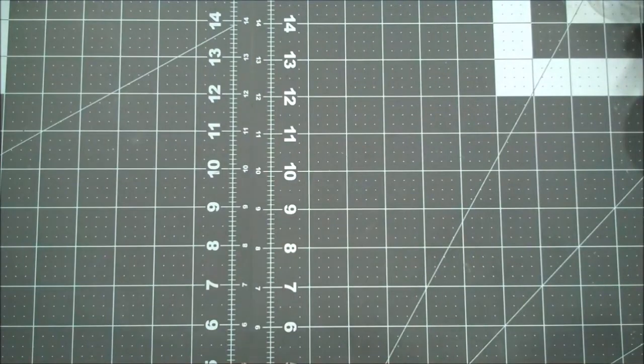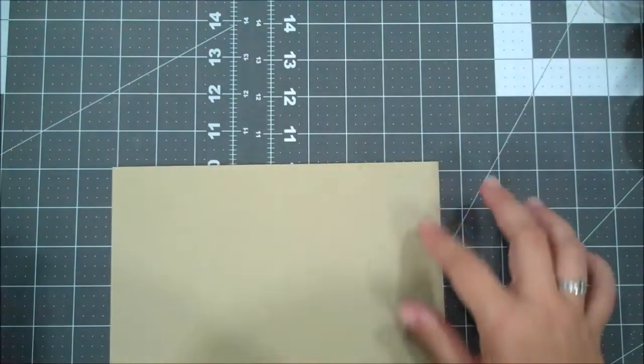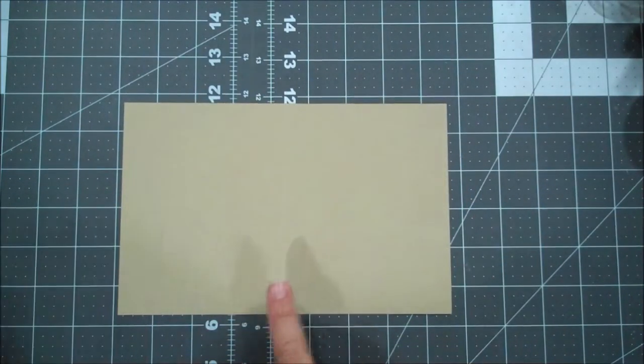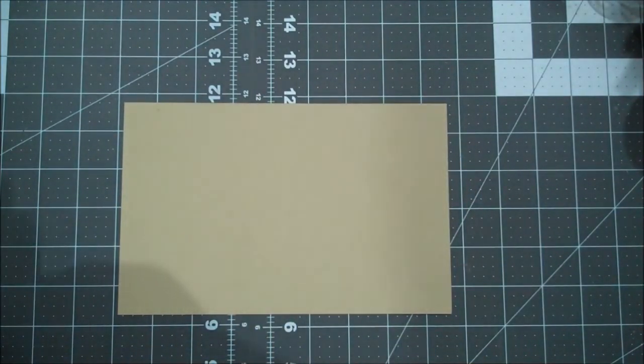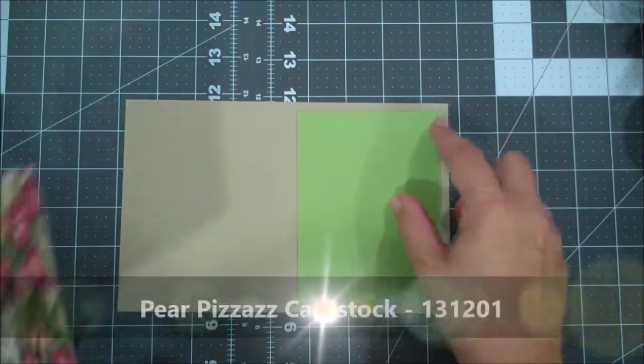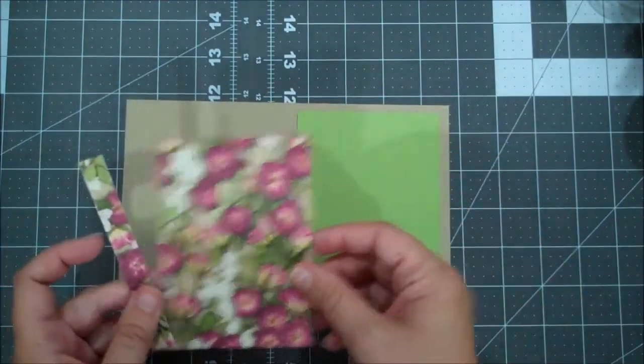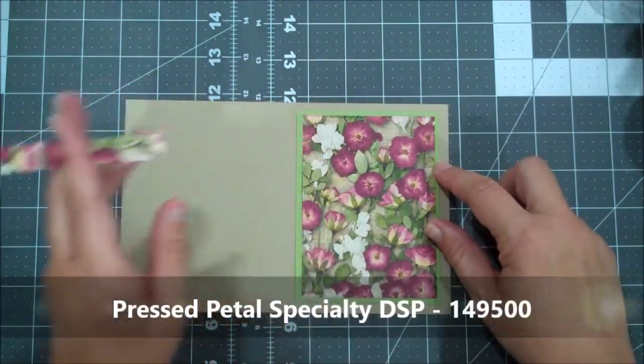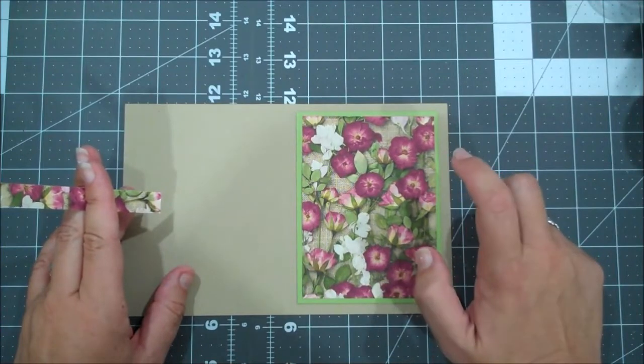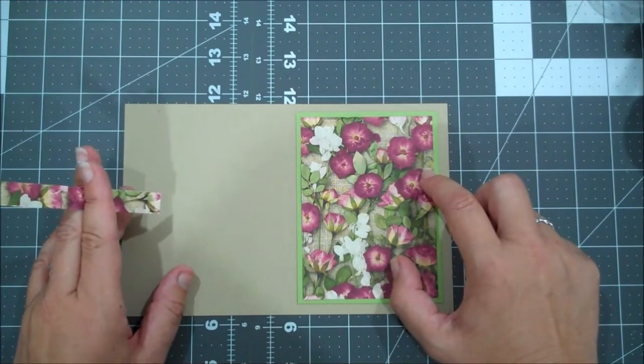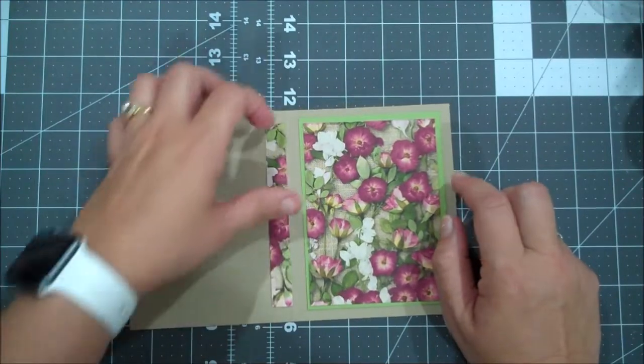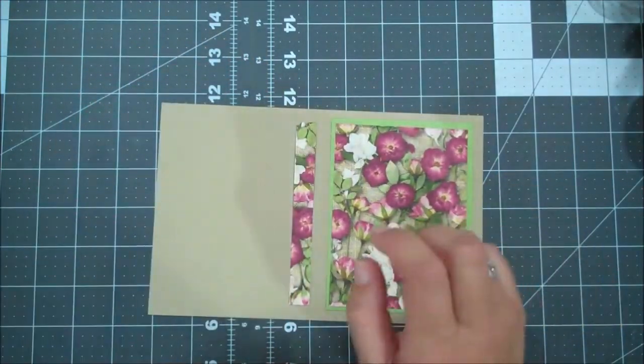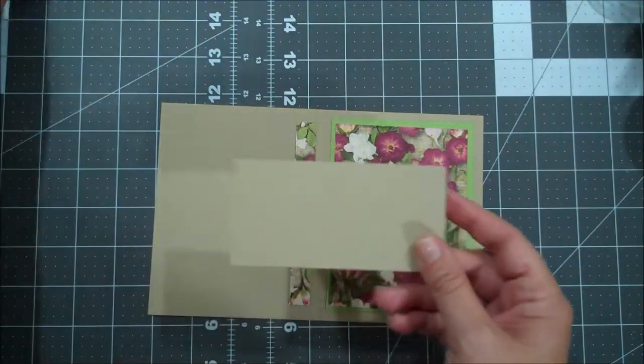For our card base I am using a piece of crumb cake, this is eight and a half by five and a half scored at four and a quarter. I have a piece of pear pizzazz that is cut three and three quarters by five, and I have a piece of this beautiful pressed petals designer series paper cut three and a half by four and three quarters. I had this little strip left over which we are also going to use on the inside of our card.